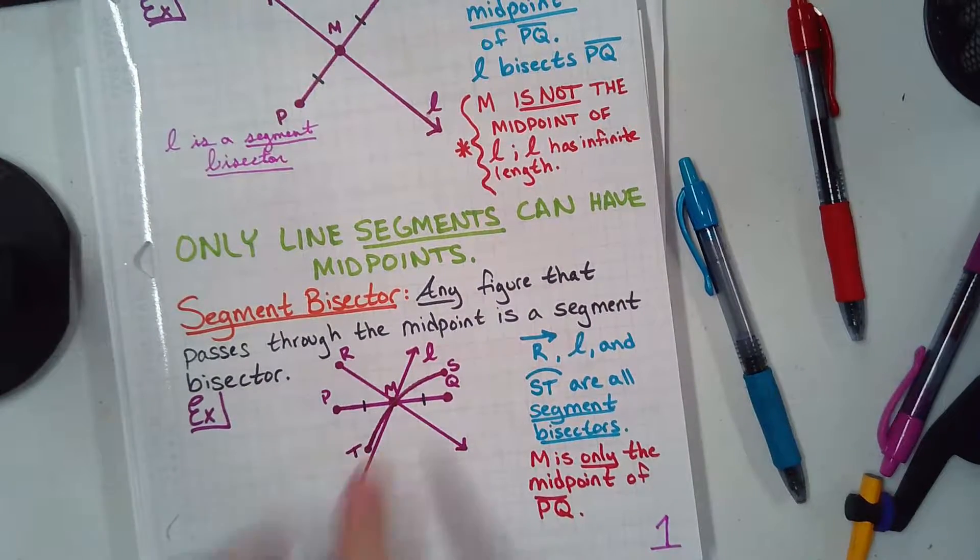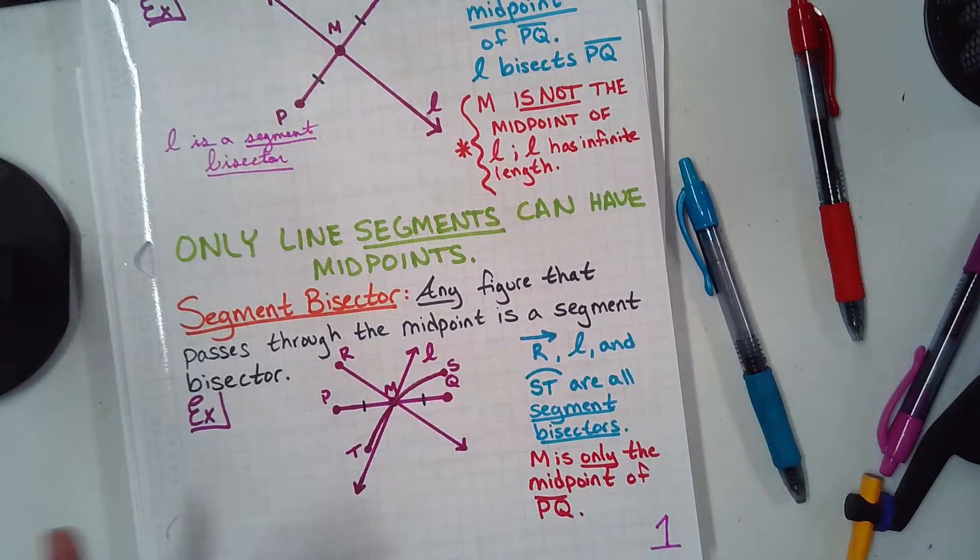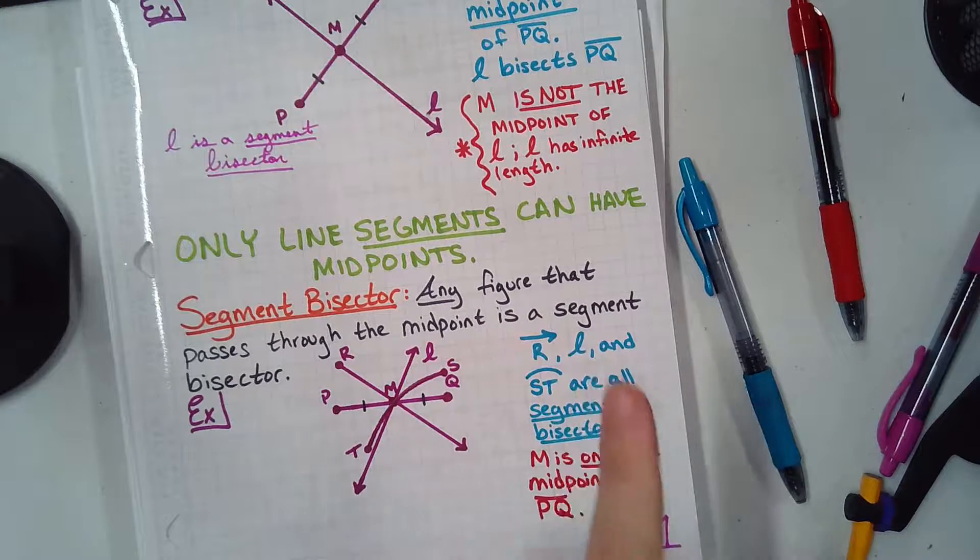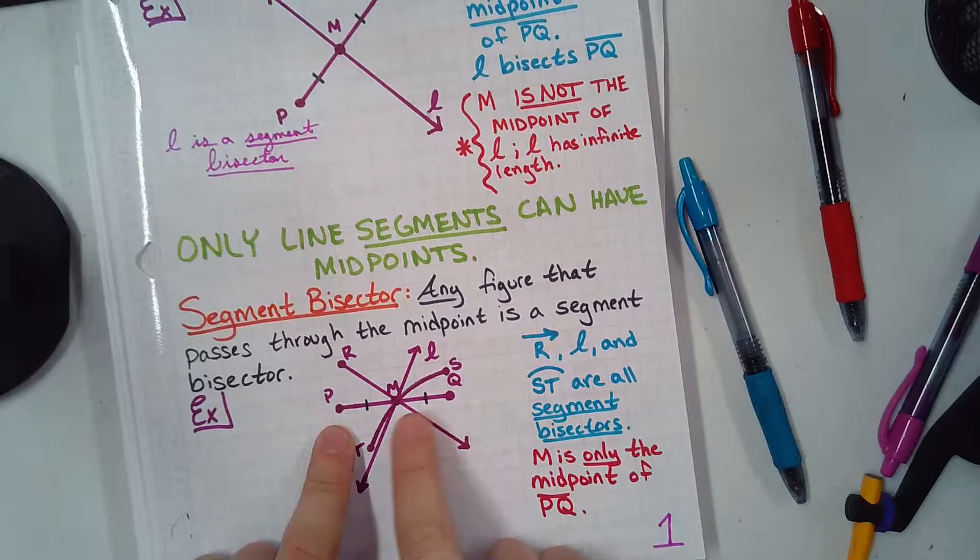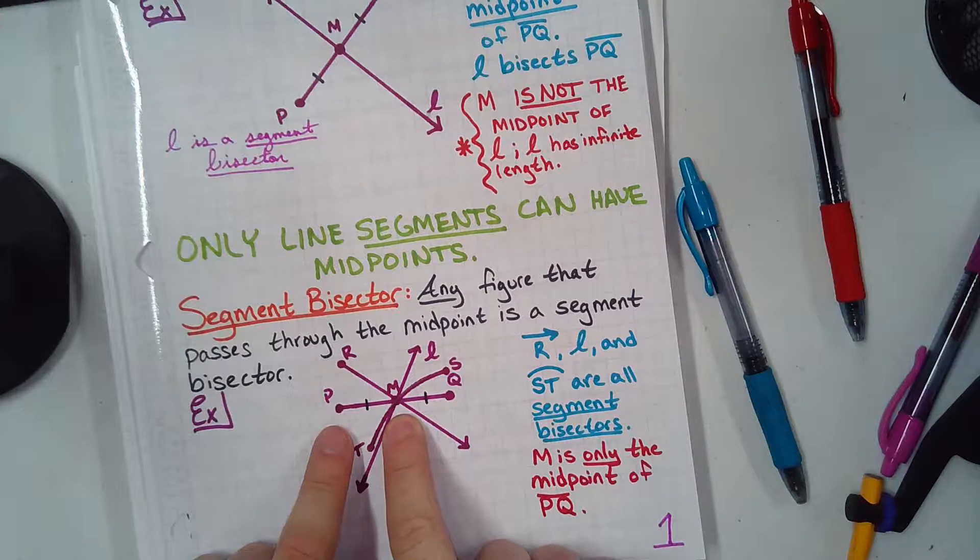Any figure that passes through the midpoint. So, anything that goes through the midpoint is a segment bisector. Anything that goes through the midpoint is cutting the thing in half. Check it out. We got PQ again. M stands for? Midpoint. Very good.